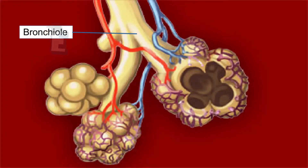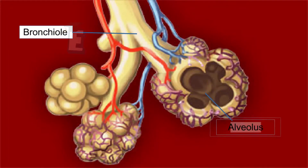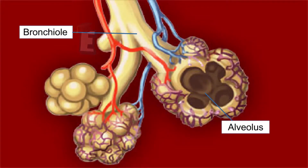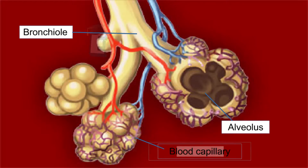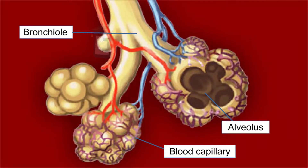At the end of bronchiole, there are many respiration bubbles that are called alveoli. Surrounding the alveolus, we can find many blood capillaries. The exchange of oxygen and carbon dioxide happens at the alveolus.